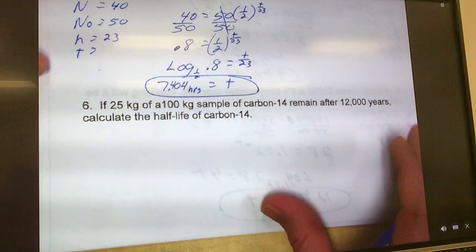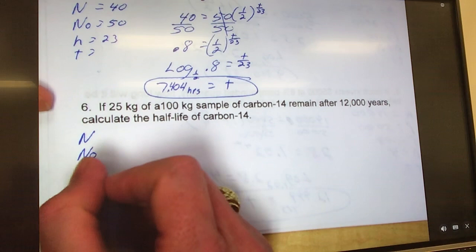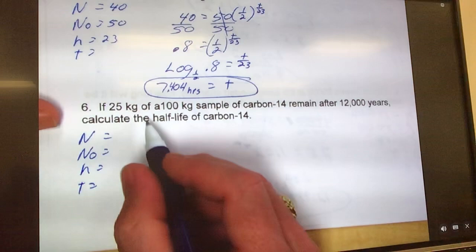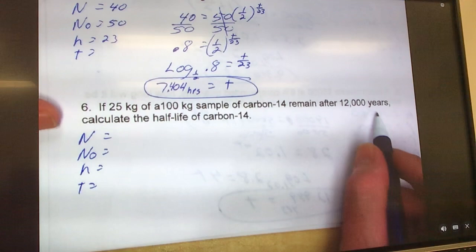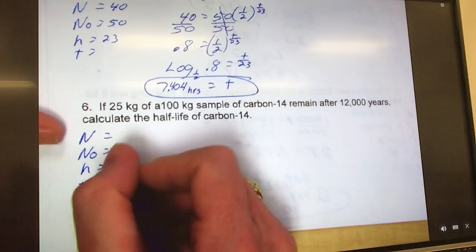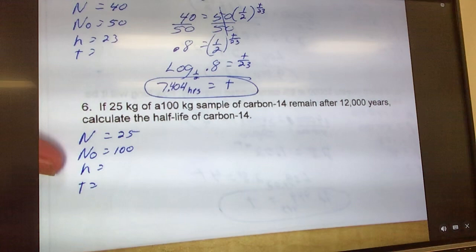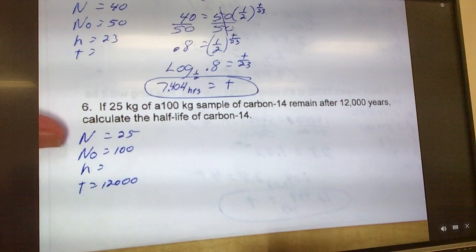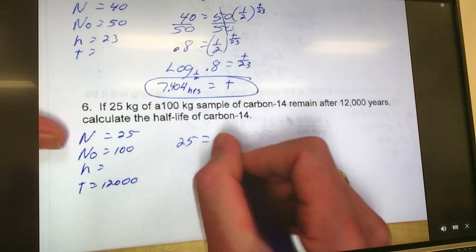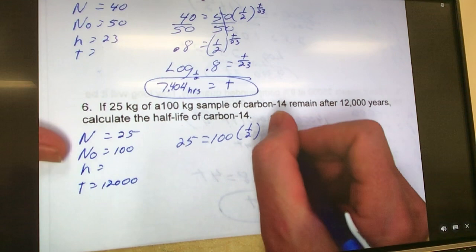And our last one: N, N₀, half-life, time. If 25 kilograms of a 100-kilogram sample of carbon remain after 12,000 years, calculate the half-life of the carbon. We're missing half-life. So 25 remains of the original 100, 12,000 years, we don't know the half-life. So we start typing them in: 25 equals 100, parentheses, one-half, raised to our time which is 12,000 over H, which we don't know.